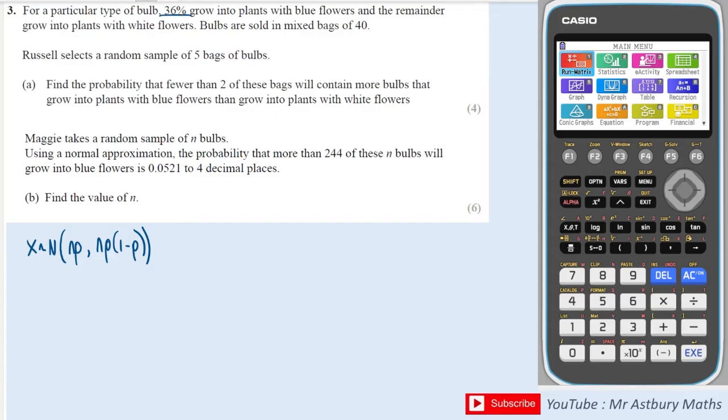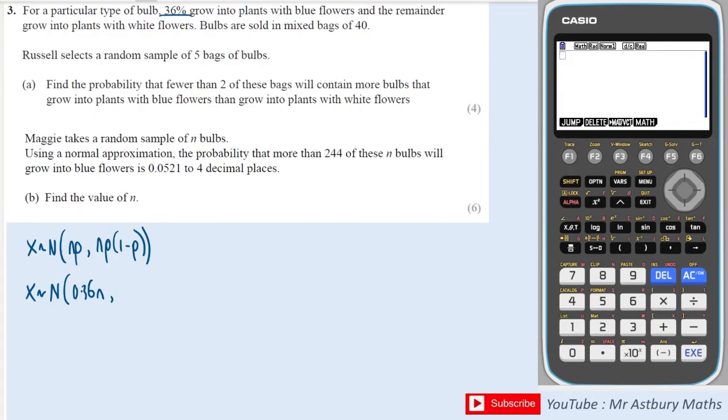Because the probability of the bulbs turning into blue flowers is 36% we can write this distribution as the mean equals 0.36n and the variance, I could just do a quick calculation of 0.36 multiplied by 1 minus 0.36, and that gives me 0.2304n.